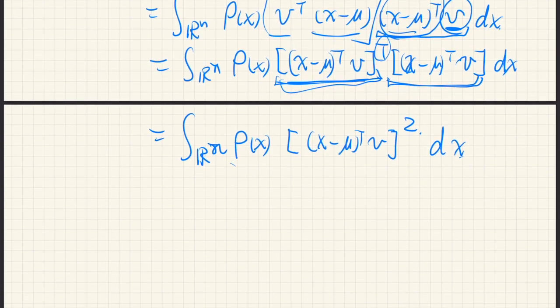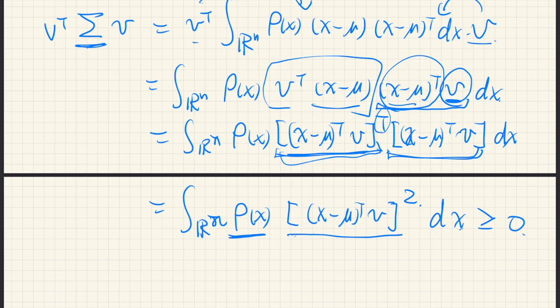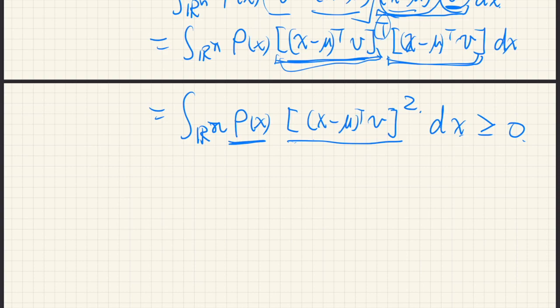Now the density function is always positive or maybe zero. And this is a square of some real number. So it is always non-negative. Therefore, this whole integral is non-negative. Therefore, the matrix sigma is always positive semi-definite. And we are done.